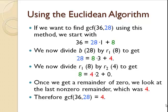Now we'll divide b, the 28, by the first remainder, 8, to get 28 equals 8 times 3 plus 4.